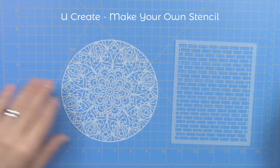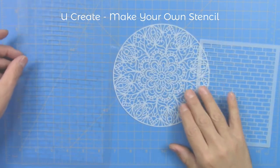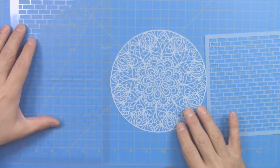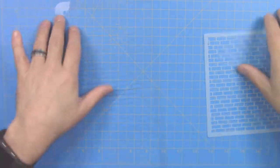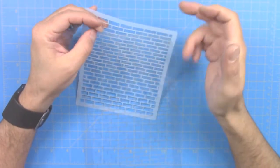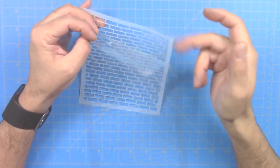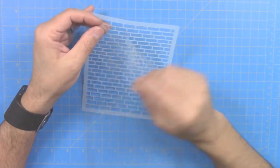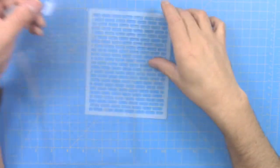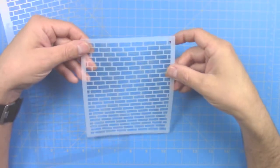And here you can see the difference between these two materials, the off-brand and the Plaid simply stencils. The off-brand is a lot thinner and it bends and is a little more delicate than the Plaid brand.